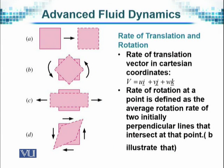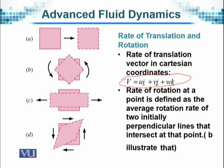For rate of translation and rotation: when writing the velocity components in three-dimensional motion, we have x, y, and z components. The velocity vector V will have components in the x, y, and z directions. If i, j, k are unit vectors in those directions, then V is denoted by Ui + vj + Wk, where i, j, k are unit vectors in x, y, and z directions — our general frame of reference in Cartesian coordinates.